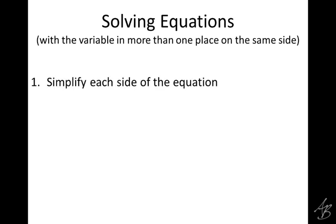The first thing we do is simplify each side of the equation. We're not changing the value, so this is not part of the golden rule — it's not one of those things where we do it on one side so we have to do it on the other. We simplify the left side and simplify the right side. One of the things we need to do to simplify each side is get rid of parentheses. How do we get rid of parentheses? We distribute. So the first thing we're going to do is distribute anywhere we can.